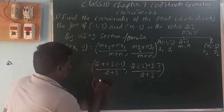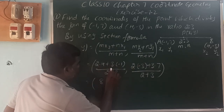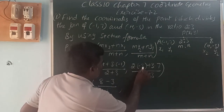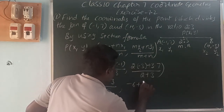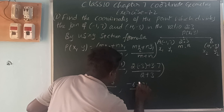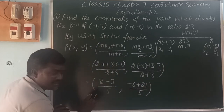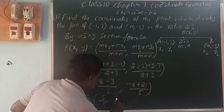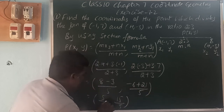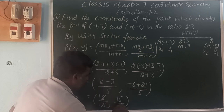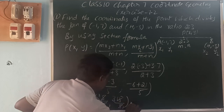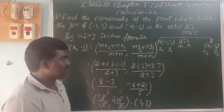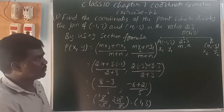Calculating: 2 times 4 is 8, plus minus 3 times 1 is minus 3, by 2 plus 3 which is 5. Next, 2 times minus 3 is minus 6, plus 3 times 7 is 21, by 5. So 8 minus 3 is 5, and 5 by 5 is 1. Minus 6 plus 21 is 15, and 15 by 5 is 3. So the point is 1 comma 3. The point 1 comma 3 divides the line segment in ratio 2 is to 3.